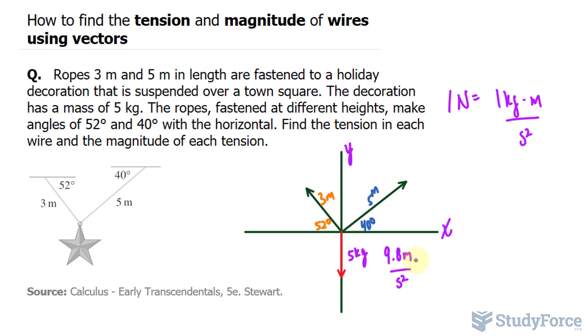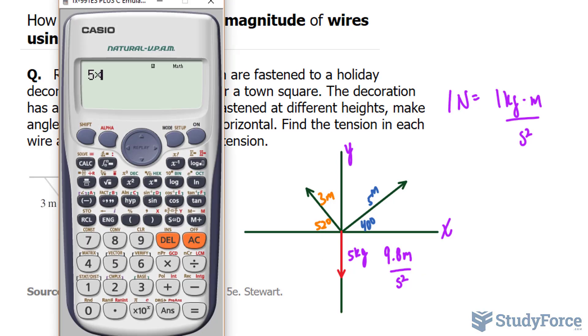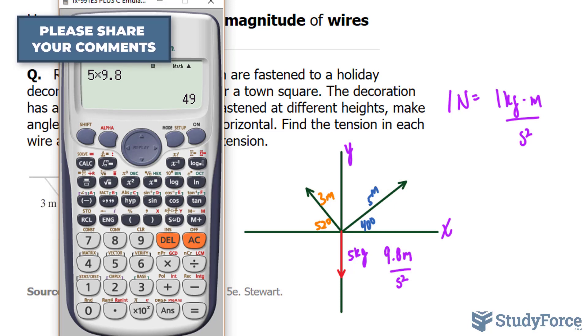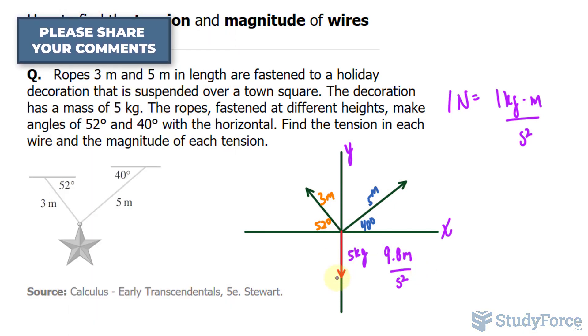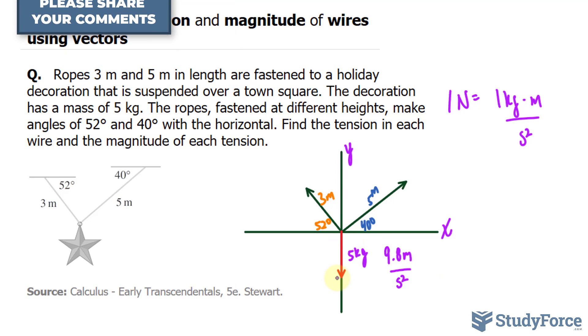Remember that 1 newton is equal to 1 kilogram times meters per second squared. So if I multiply these two numbers out, I'll end up with the tension of this vector in newtons. Let's go ahead and do that. 5 times 9.8 gives us 49 newtons. So this wire, this ornament, exerts 49 newtons of force.